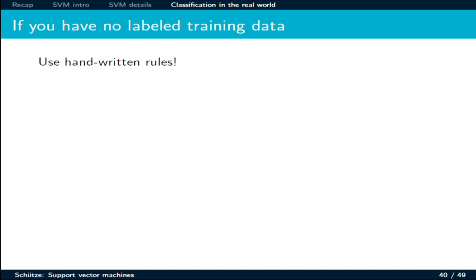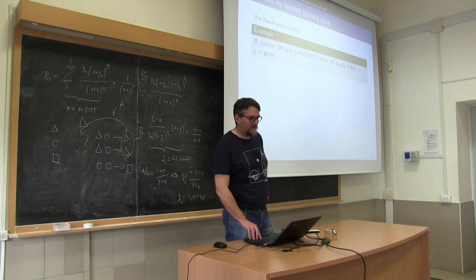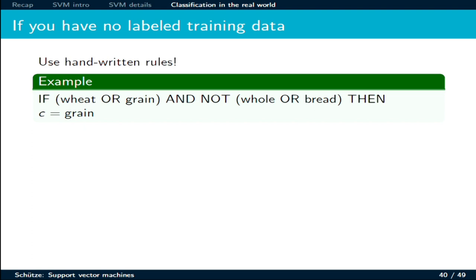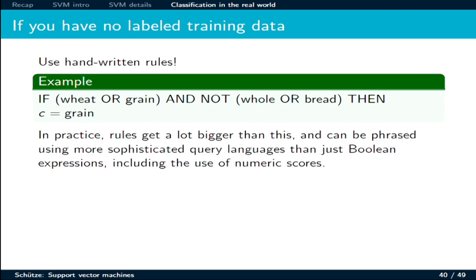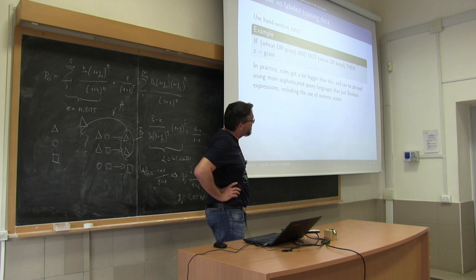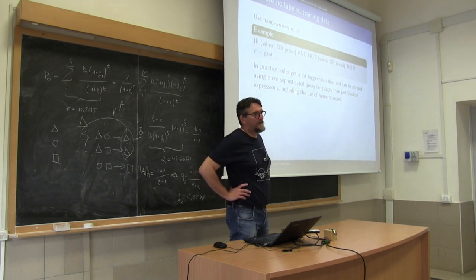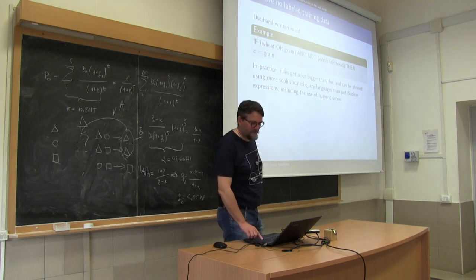In some cases you don't have labeled data. One option is to use rules, which basically observe the data and assign a category. For example: if wheat or grain and not wool or bread, then class equals grain. In practical cases, the rules are much bigger. You have rules engines using sophisticated query languages — much more than Boolean expressions — with numeric scores giving insights about confidence of the rules regarding the associated label.